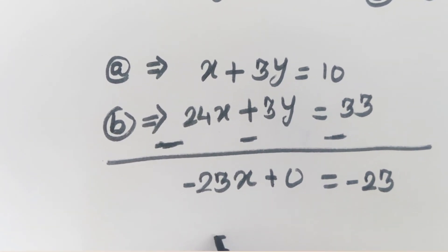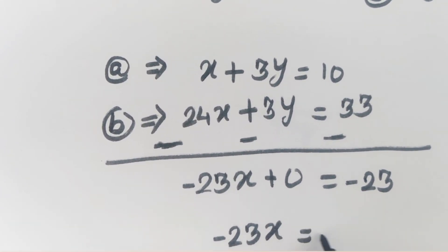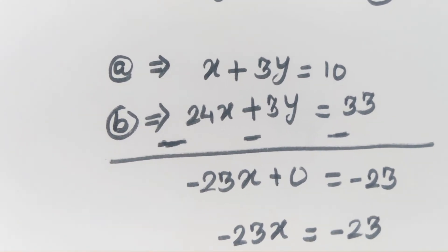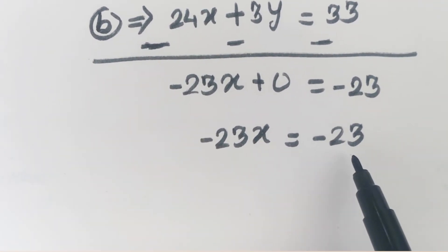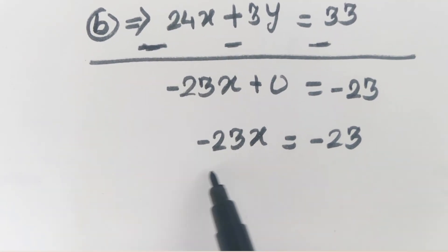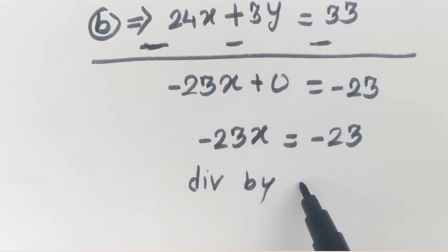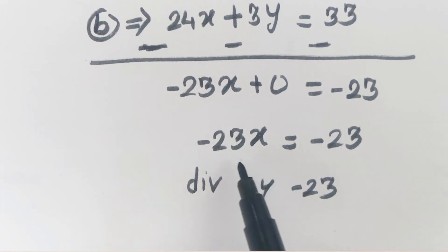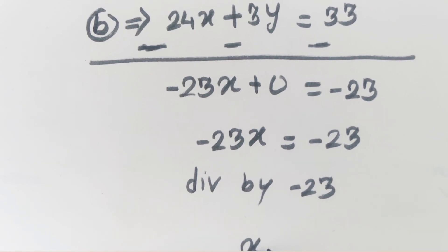We have minus 23x equals minus 23. Dividing both sides by minus 23, we get x equals 1.